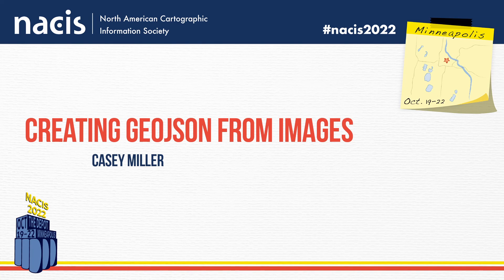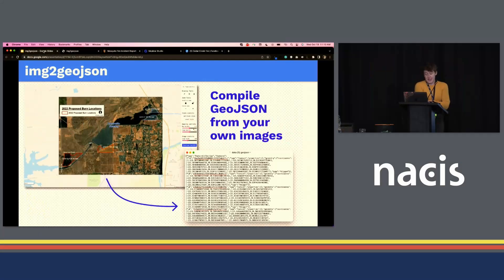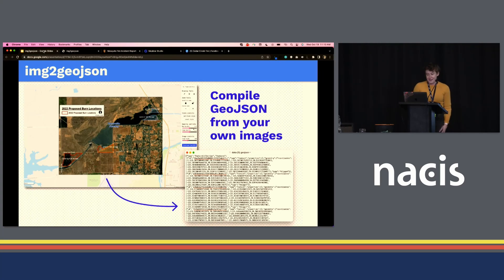So I'm going to talk about a side project that I've been working on and want to keep working on. It's part of the reason I want to present it. I named it image to GeoJSON. Basically it lets you compile GeoJSON from images — something I've done a lot of by hand, so I thought, what if I made a tool to make it easier.